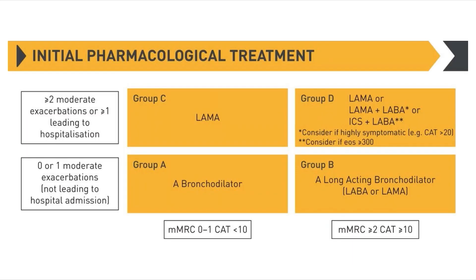Initial pharmacological treatment by ABCD group: Group A — a bronchodilator; Group B — a LABA or LAMA; Group C — a LAMA; Group D — LAMA, or a LAMA/LABA combination, or ICS can be considered. The criteria for using ICS — inhaled corticosteroids — is an eosinophil count of 300 or more.